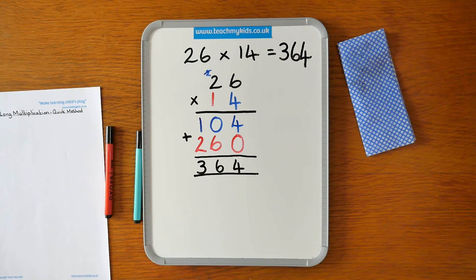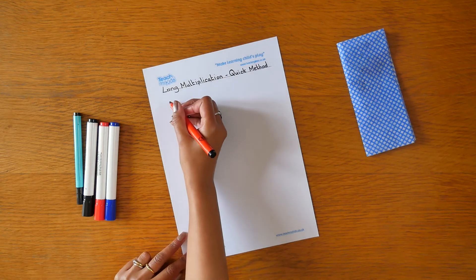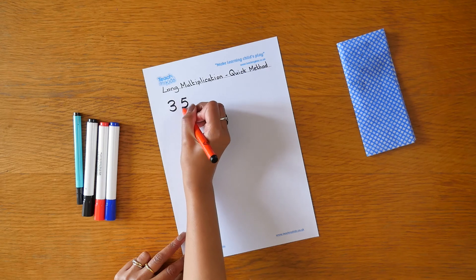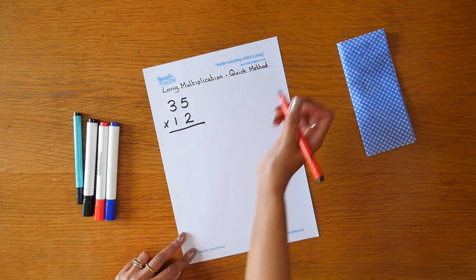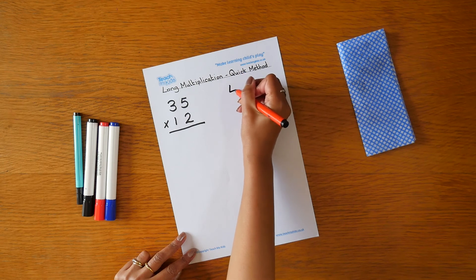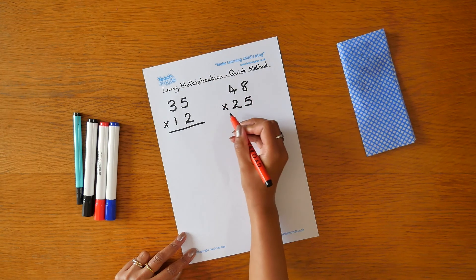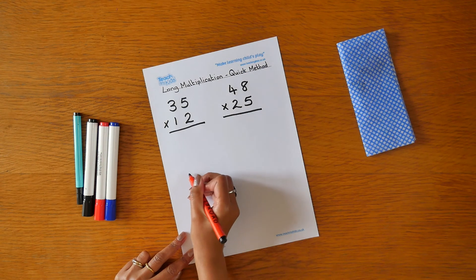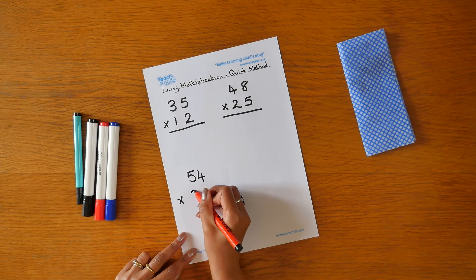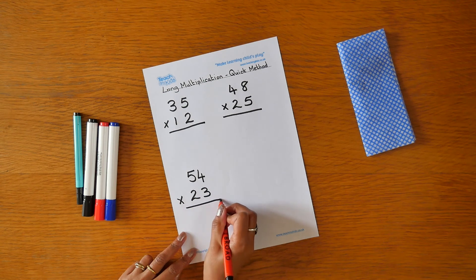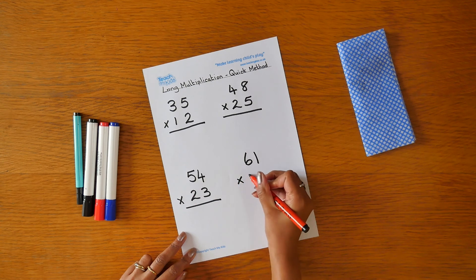Now it's your turn. Try these sums: 35 times 12, 48 times 25, 54 times 23, 61 times 34.